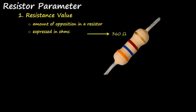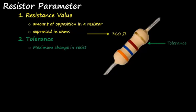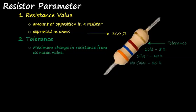The second parameter is tolerance — the maximum change in resistance from its rated value. In every resistor there is a minimum and maximum tolerance depending on the tolerance value: gold has 5% tolerance, silver has 10% tolerance, and the absence of color has 20% tolerance. We will discuss this further in the topic of decoding resistors.